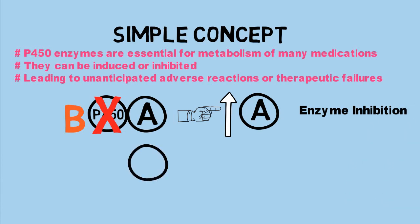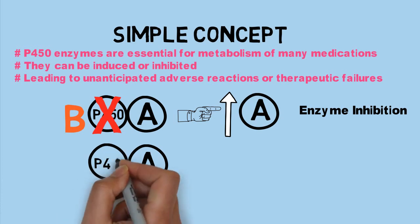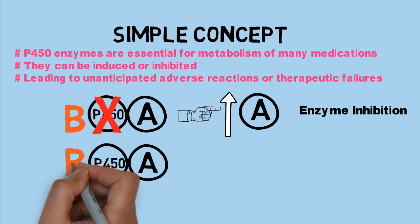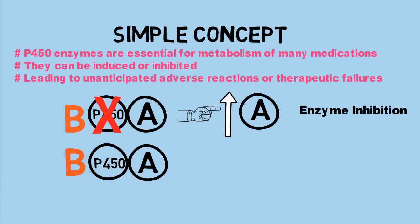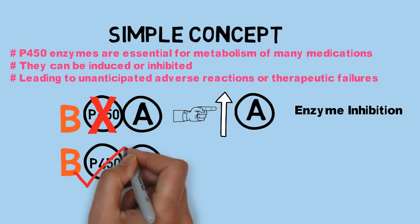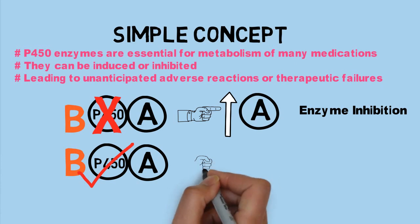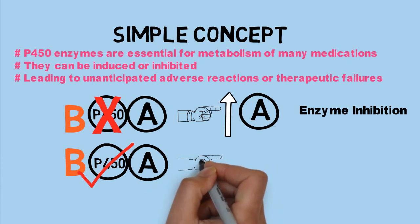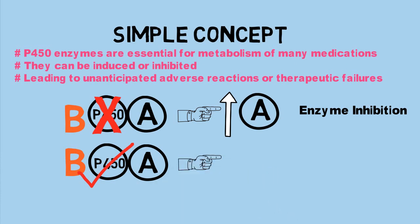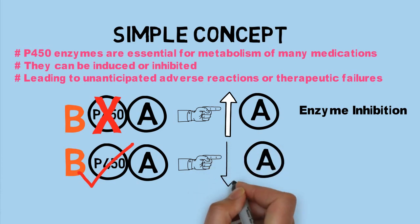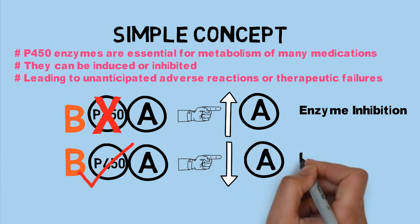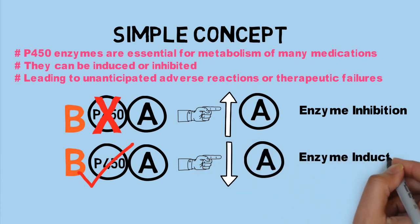Similarly, suppose a patient is taking drug A which is metabolized by cytochrome P450, and you give that patient a drug B which induces cytochrome P450. When cytochrome P450 is induced by drug B, the metabolism of drug A is increased. When the metabolism of drug A is increased, the concentration of drug A in the blood falls, leading to therapeutic failure. This is the mechanism of enzyme induction.